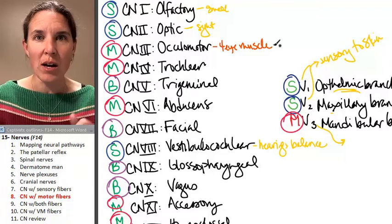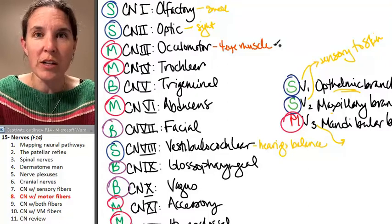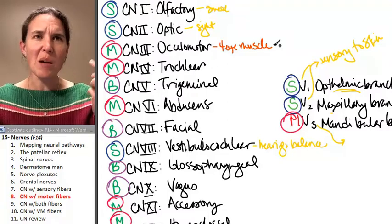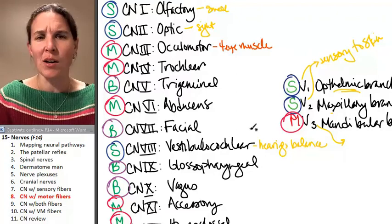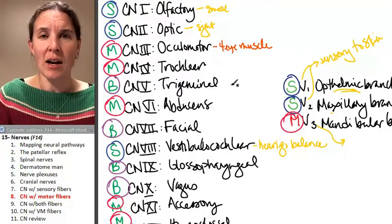Oculomotor innervates four of them. So think about if you cut oculomotor, you're going to have some wonky eye action going on.